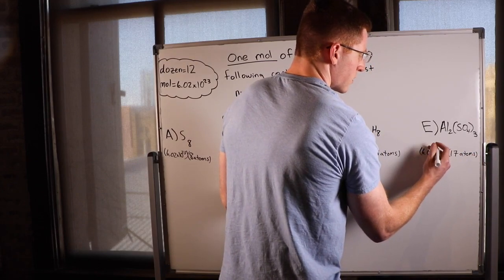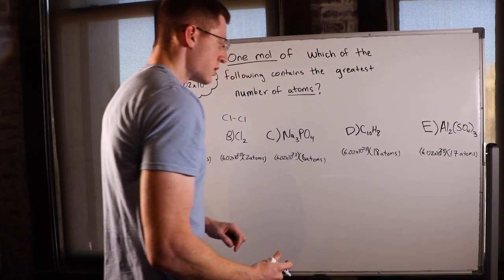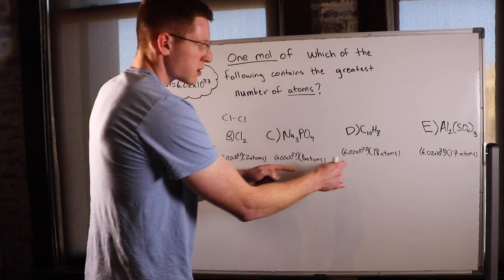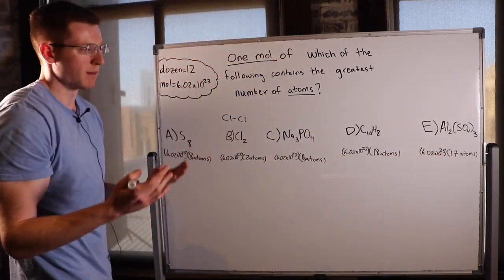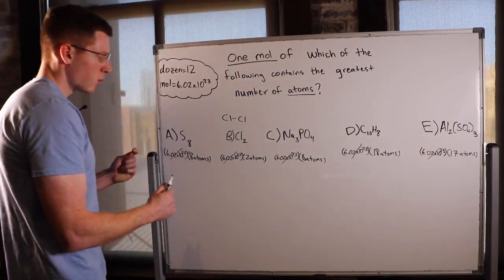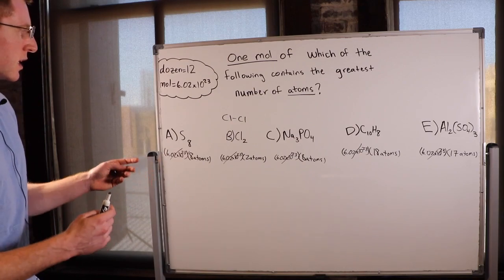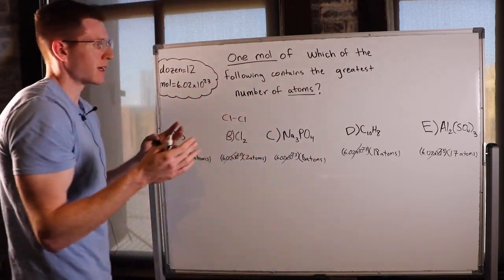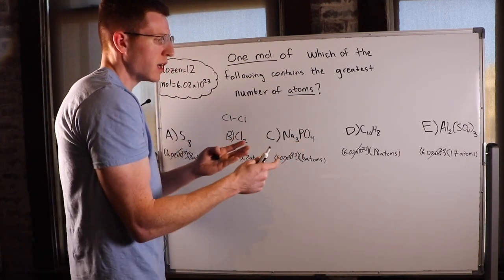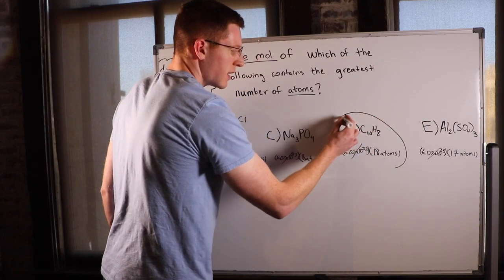Each option is multiplied by one mole. So without even pulling your calculator out, you can see that each one of these terms contains the same mole amount. All we really needed to know was how many atoms were in each individual molecule, because we're going to have the same number of each molecule. I could have asked 'one dozen of which contains the greatest number of atoms' — it would have been the same. All that matters is the one that had the most atoms per individual molecule, which was C10H8. So that's our winner.